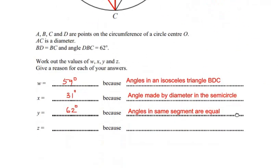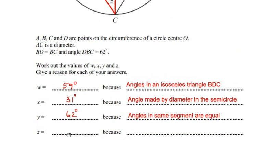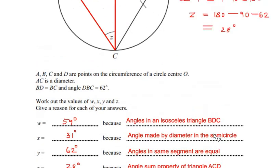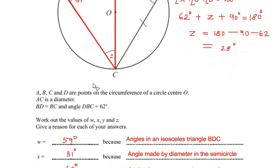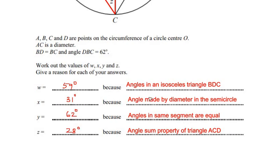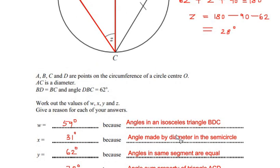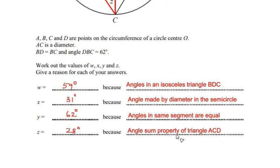Angle Z = 28 degrees, because of the angle sum property of triangle ACD. To summarize: W = 59° (isosceles triangle), X = 31° (angle in semicircle), Y = 62° (angles in same segment), Z = 28° (angle sum of triangle). I hope you understood all the steps — please like, share, and subscribe. Thank you for watching.